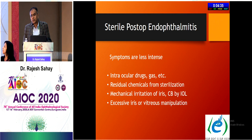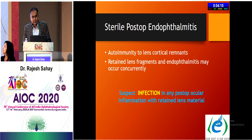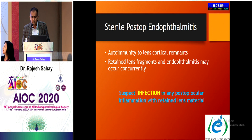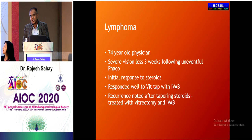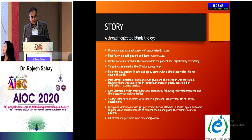Sterile post-operative endophthalmitis occurs when no organism is identified. Symptoms are less intense and causes include intraocular drug use, gas, residual chemicals from sterilization, mechanical irritation of the iris and ciliary body by the IOL, and excessive iris or vitreous manipulation. Autoimmunity to lens cortical remnants can also cause sterile endophthalmitis. Retained lens fragments and endophthalmitis may occur concurrently. A case of intraocular lymphoma was treated as endophthalmitis but ultimately responded to methotrexate.